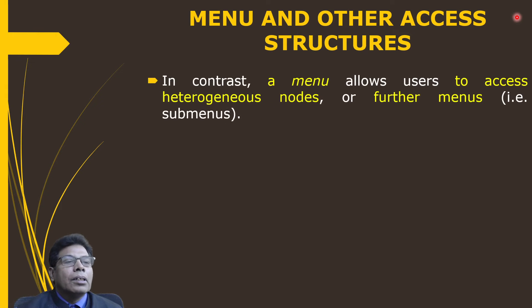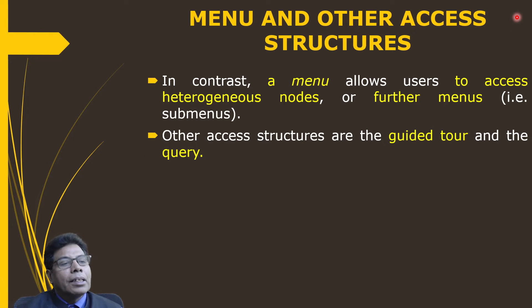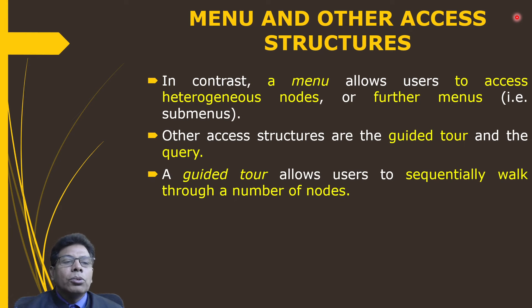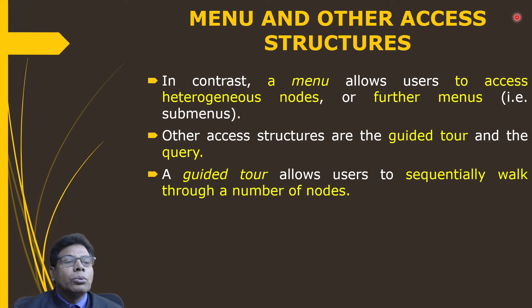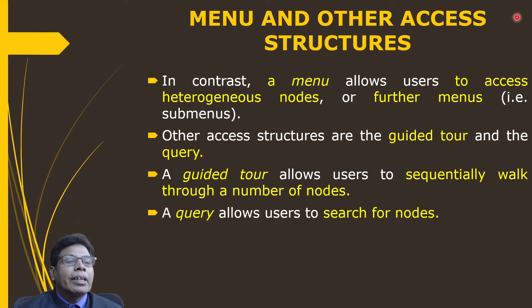A menu allows users to access heterogeneous nodes or further menus — that is, submenus — so we can have a hierarchy of menus. Other access structures are the guided tour and the query. A guided tour allows users to sequentially walk through a number of nodes, as seen in many web applications. A query allows users to search for nodes — when you want a particular item, you can search for it using the query.